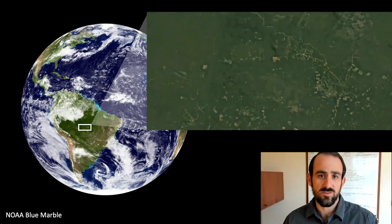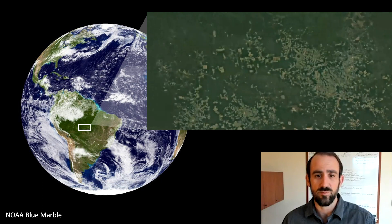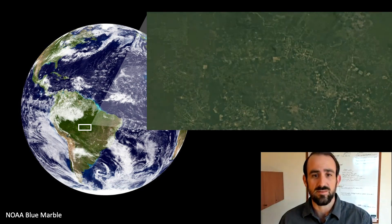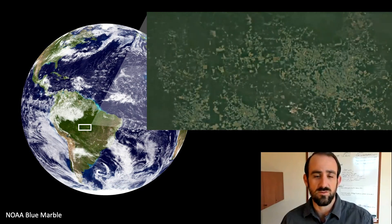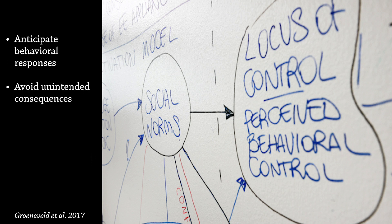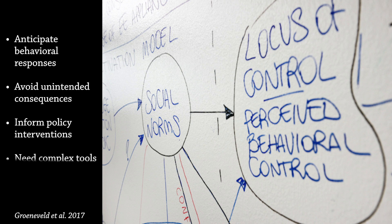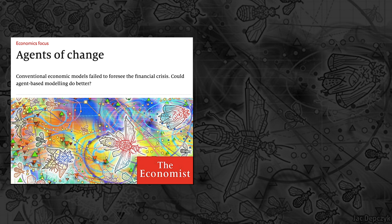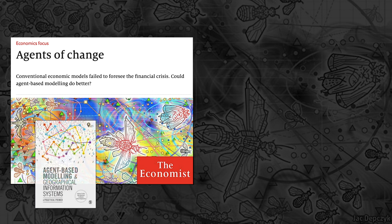Managing socio-environmental systems depends on understanding how people make decisions that lead to modifications of environmental systems, how those modifications create feedbacks that impact people, and how subsequent decision-making changes in response to those impacts. Understanding human decision-making is not just an academic pursuit — it is also essential for anticipating likely behavioral responses to changing conditions, which is critical for avoiding unintended consequences of policy and management interventions. We need tools capable of handling such complexity. Agent-based models have become a popular tool for studying socio-environmental systems because they have the capability to explicitly represent human decision-making in flexible and context-dependent ways.